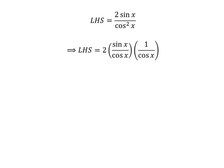We can rewrite the above expression as the left hand side equal to 2 times sin(x) upon cos(x) times 1 upon cos(x). Since sin(x) upon cos(x) is equal to tan(x) and 1 upon cos(x) is equal to sec(x), the left hand side equals 2 times tan(x) times sec(x), which is equal to the right hand side. Thus, we have proved the identity.